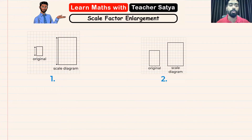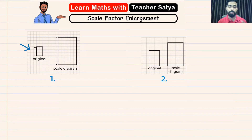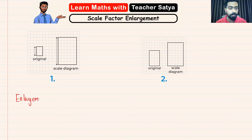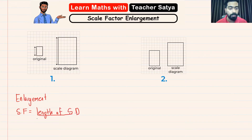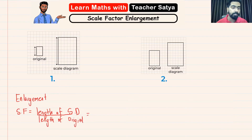Looking at question number one, the scale diagram is bigger than the original picture, so we know that it is an enlargement. In order to find the scale factor of this enlargement, we use the formula: scale factor equals the length of the scale diagram — which I'll call SD — over the length of the original diagram.